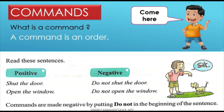You have some examples here. Read these sentences. You know what a positive sentence is — when we are speaking positively, like: shut the door — someone is telling you to go and shut the door. But if someone says: do not shut the door, that person is giving you a command not to shut the door. Open the window — this is a positive sentence. The negative one is: do not open the window.